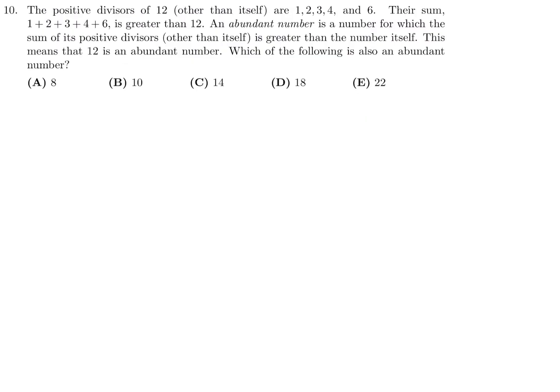The positive divisors of 12 other than itself are 1, 2, 3, 4, and 6. Their sum, 1 plus 2 plus 3 plus 4 plus 6, is greater than 12. An abundant number is a number for which the sum of its positive divisors other than itself is greater than the number itself. This means that 12 is an abundant number. Which of the following is also an abundant number?